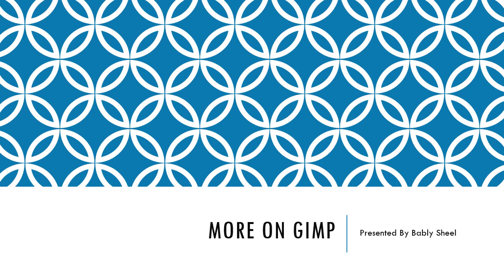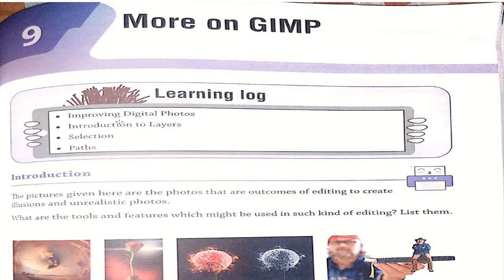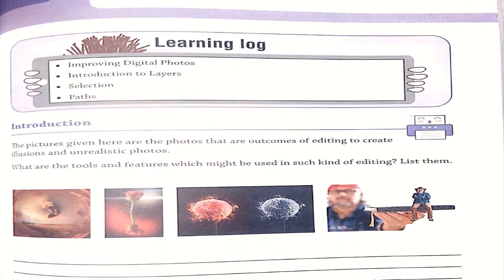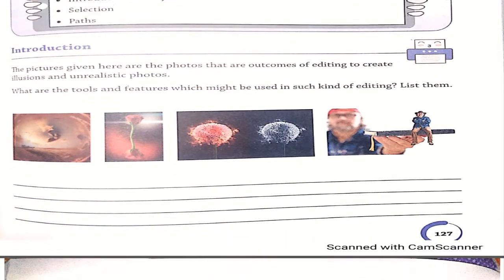Good day students. Today we will learn chapter number nine, which is more on GIMP. The topics we will cover are: improving digital photos, introduction to layers, selections, and paths. We'll look at pictures that are outcomes of editing to create illusion and unrealistic photos, and find out what tools can be used for this type of editing.